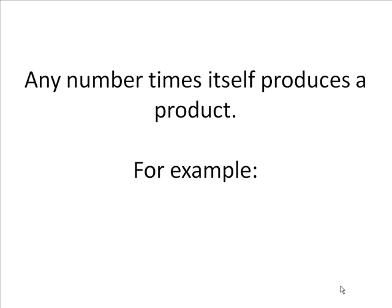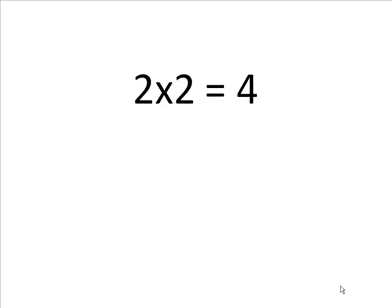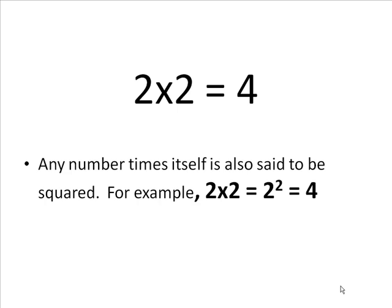Any number times itself produces a product. For example, 2 times 2 is 4. 2 squared is 4. Any number times itself is also said to be squared. For example, 2 times 2 equals 2 squared equals 4.